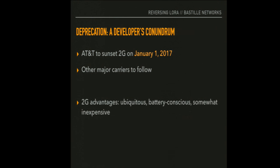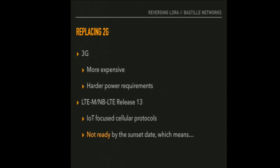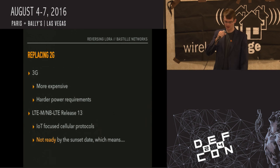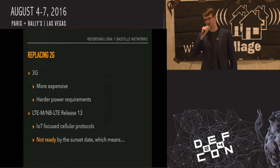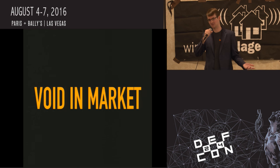These 2G networks are popular for IoT applications because they're battery conscious, you get service everywhere, and they're somewhat inexpensive. So if you are a company deploying a device on a GPRS or Edge network, where are you going to move? You can move to 3G, which is more expensive with harder power requirements, or you can wait for LTE-M Release 13. But that's not going to be deployed until end of 2017 or early 2018, so there's a big hole in the market for these embedded devices to connect.